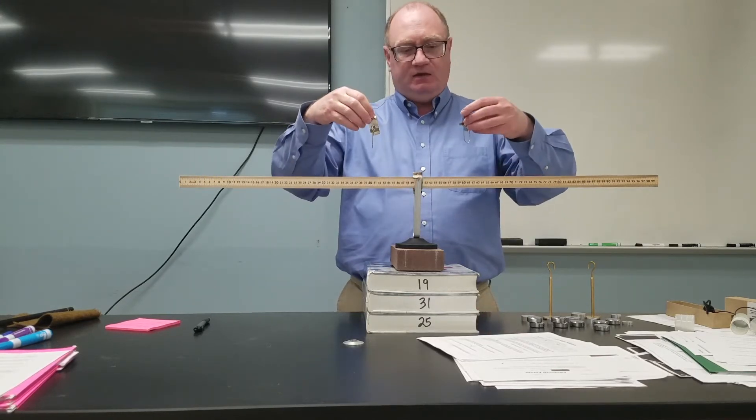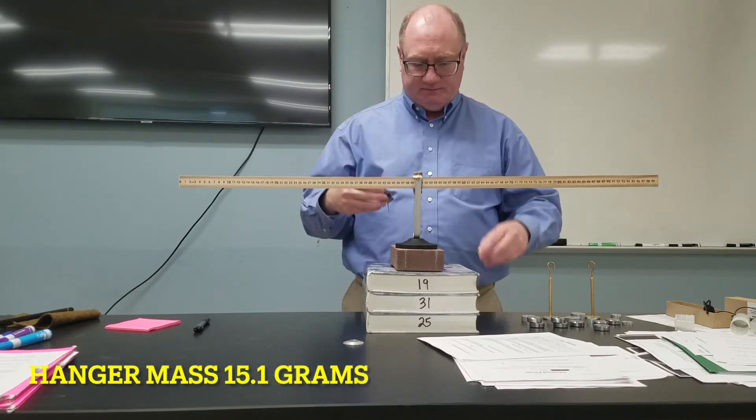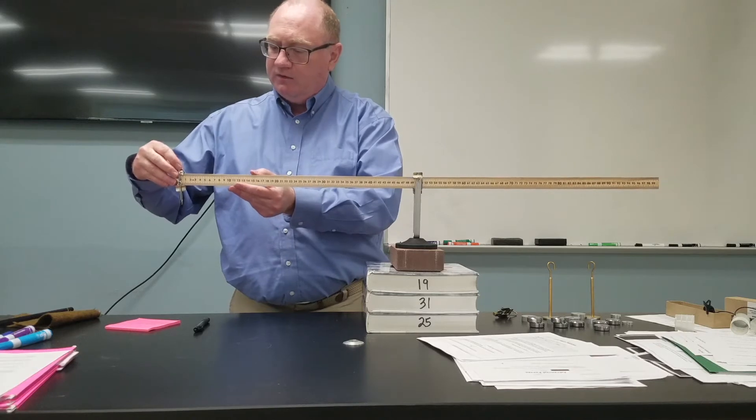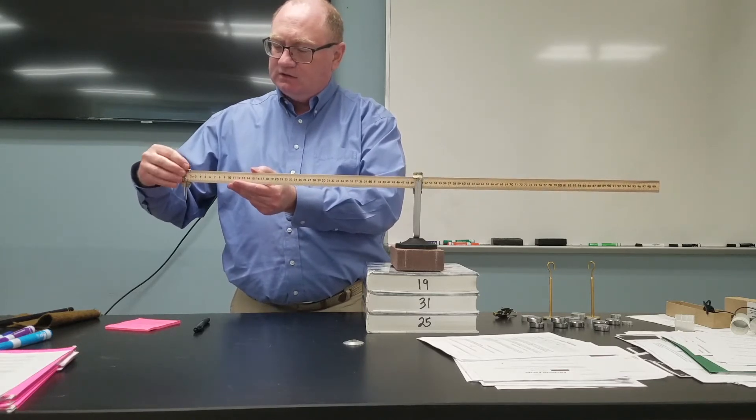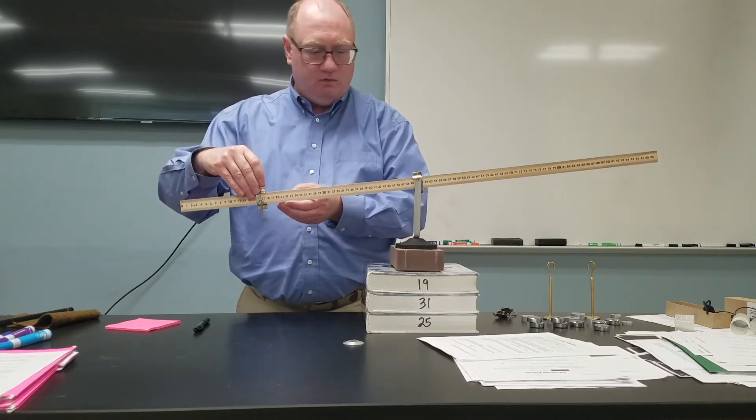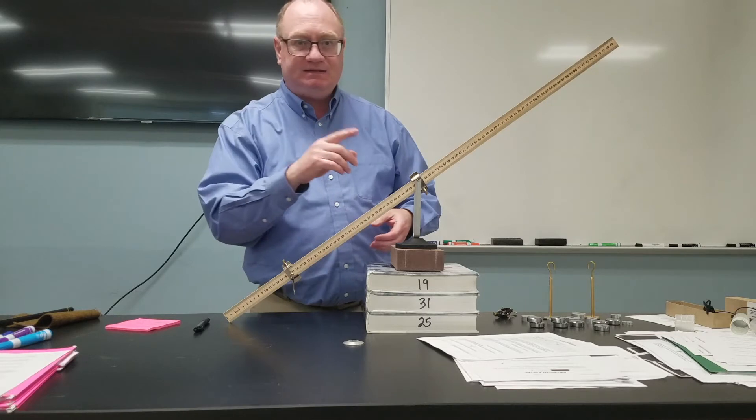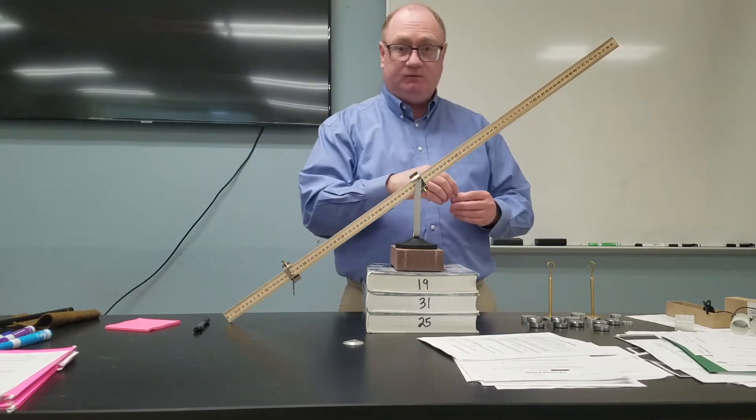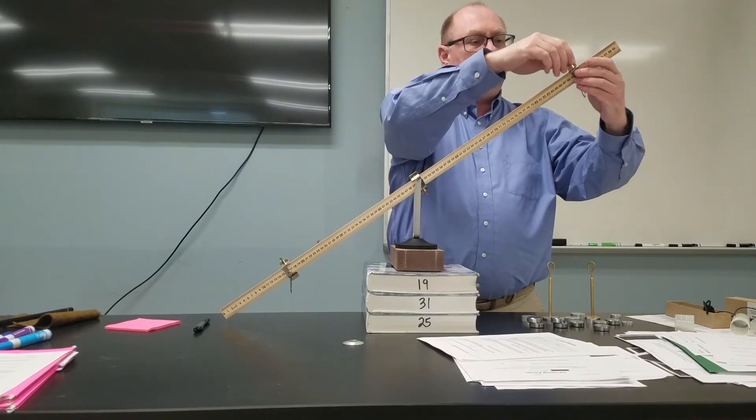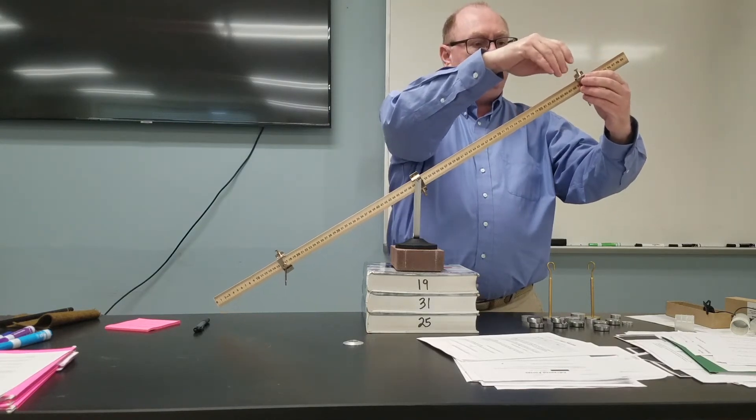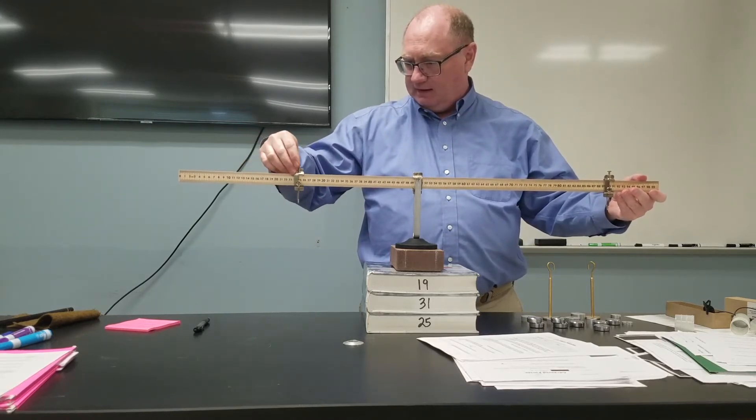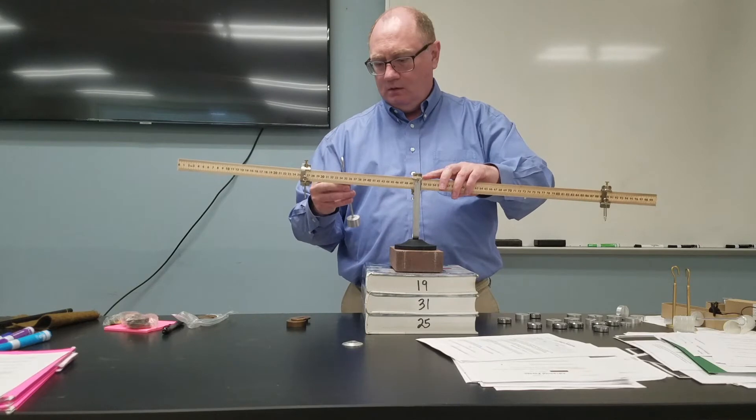Both these hangers have a mass of 15.1 grams, and so I want to place them on here. We're first going to set this up so that we have different masses on each side, so different forces, and we are going to balance it that way. So I want to move this one in.